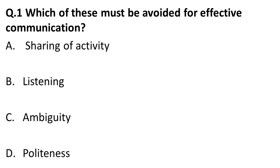The question is: which of these must be avoided for effective communication? Effective communication requires good listening, politeness, and sharing of activity. However, ambiguity — where words have more than one meaning — creates confusion. So ambiguity should be avoided. For effective communication, ambiguity must be avoided.